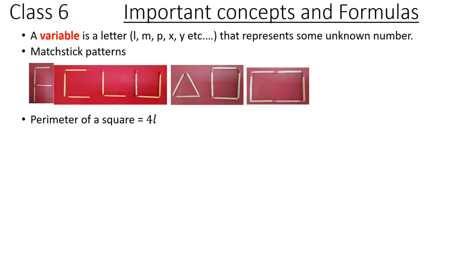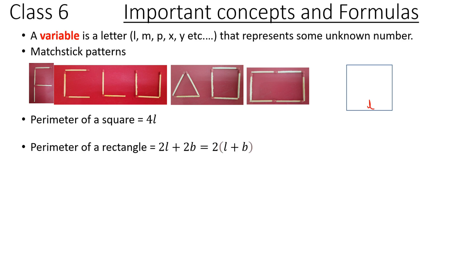Perimeter of a square. Perimeter means sum of all the sides of a given figure. A square has four equal sides. Let's say the side length is L. So four sides means 4L, which is 4 times the side.